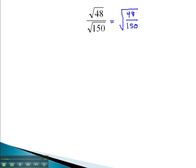We can now look at this fraction and reduce it. 48 and 150 are both divisible by 6. 48 divided by 6 is 8, and 150 divided by 6 is 25. Let's go back to treating these like two separate radicals. In the numerator we have the square root of 8, and in the denominator we have the square root of 25.